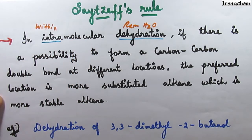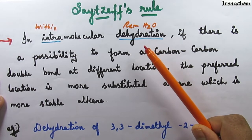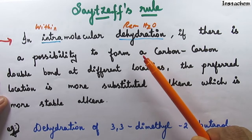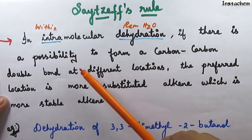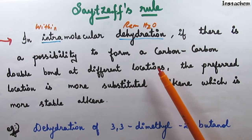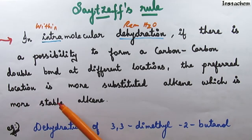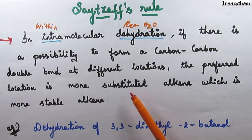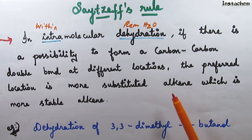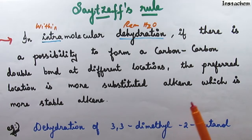Whenever there is a chance to form more than one position for a double bond during an elimination reaction — double bond is produced between carbon and carbon — we have to choose the double bond which contains more number of substituents, more number of alkyl groups. That double bond, that alkene, that olefin is more stable. That is Saytzeff's rule: the double bond which gets more number of alkyl groups is more stable according to Saytzeff's rule.